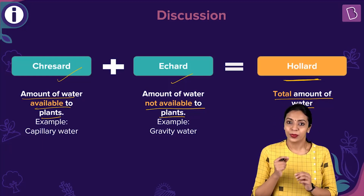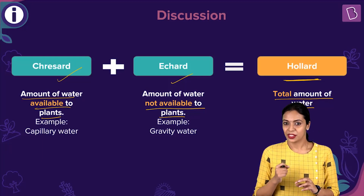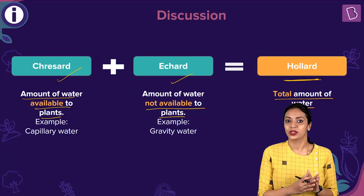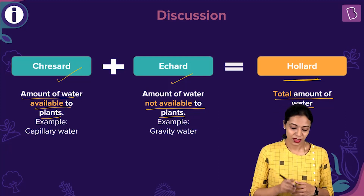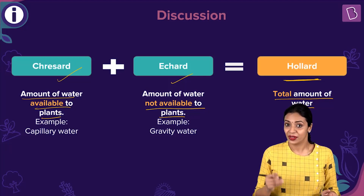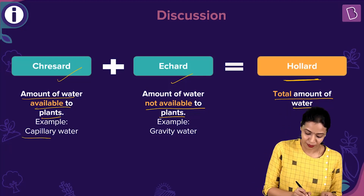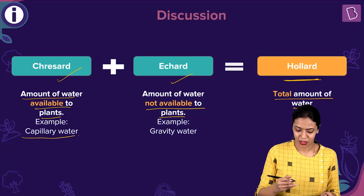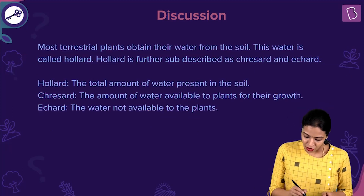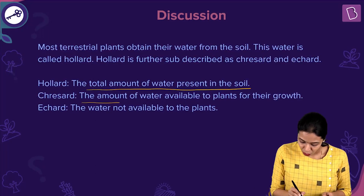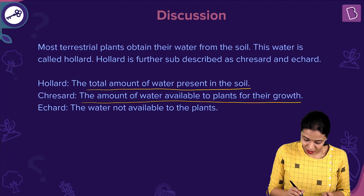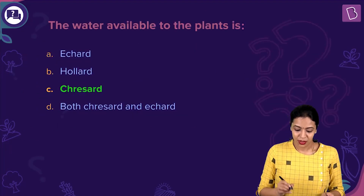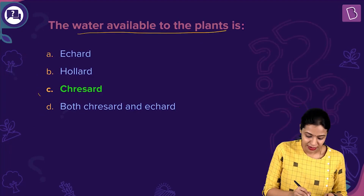The amount of water available to plants is known as Cressard. An example of Cressard is capillary water. Between the soil particles there are spaces, and in tiny spaces water can be retained against the force of gravity — this is capillary water, a form of water present in the soil that plants can use. About 75% of water that plants get from the soil is in this form. So: Holard is the total water in soil; Cressard is water available to plants; Echard is water not available to plants. Cressard plus Echard equals Holard. The correct answer is option C, Cressard.